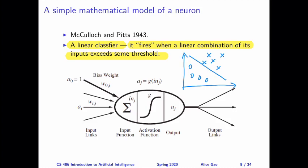We calculate a linear combination of its inputs. As you can see in this picture, this summation is saying we are calculating a linear combination of the inputs. If this sum exceeds some threshold, then the neuron is going to decide to fire. You can also adjust how much it fires — the strength of the output signal as well.